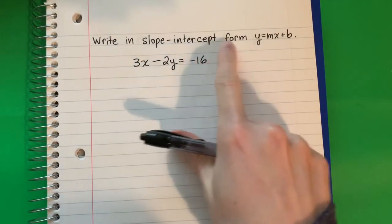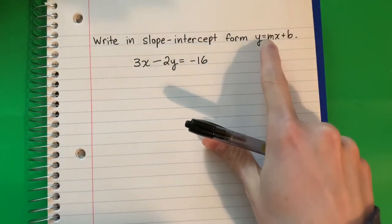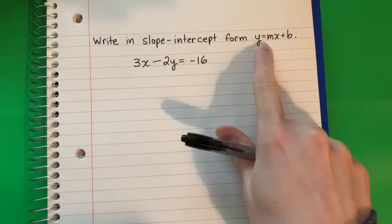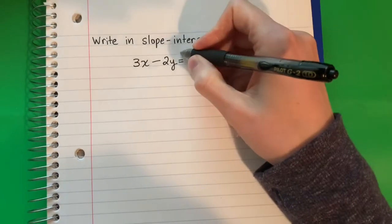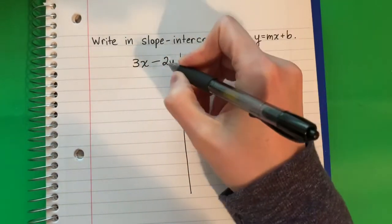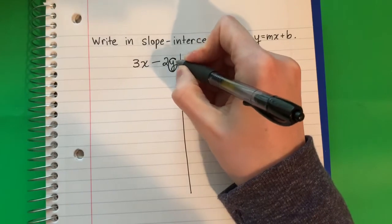Write in slope-intercept form y equals mx plus b. To get this form, I need the y alone. So I'm going to go ahead and circle the y.